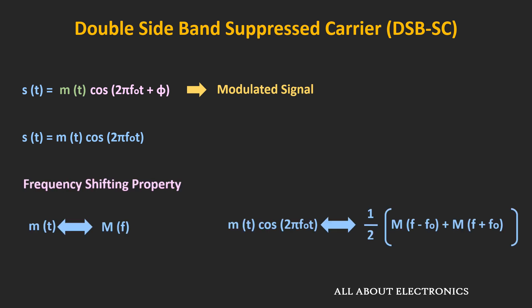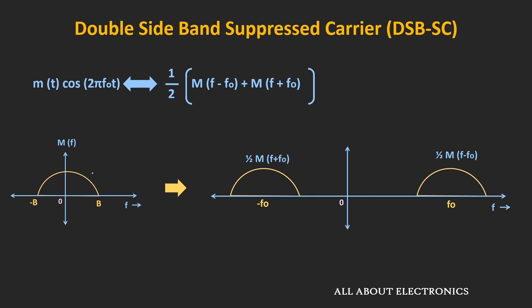Using the frequency shifting property of the Fourier transform: if the Fourier transform of the message signal m(t) is M(f), and this signal is multiplied with the carrier signal cos(2πf₀t), then its Fourier transform can be found accordingly. The frequency spectrum of the message signal, when multiplied with the carrier signal cos(2πf₀t), gets shifted to frequency f₀. Assuming the bandwidth of the baseband signal is B, the bandwidth of the modulated signal becomes 2B, centered around ±f₀.